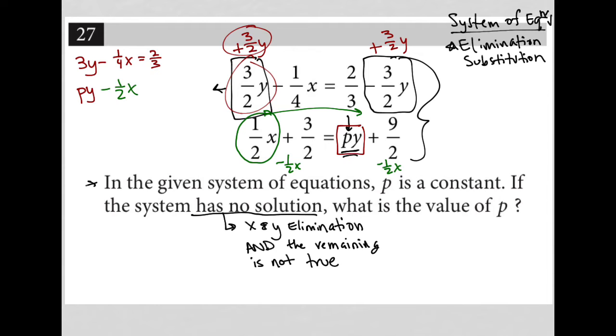And then I have my nine halves here, but it has a like term with the three halves. So I also need to subtract three halves from both sides. And nine halves minus three halves equals six halves, which equals three. So this would just be equal to three.